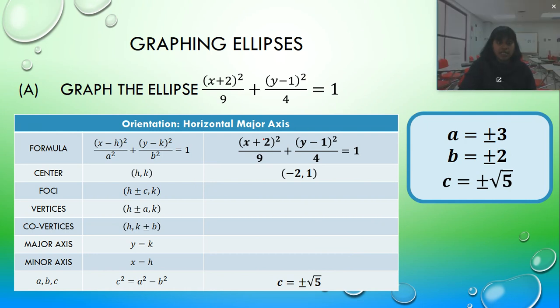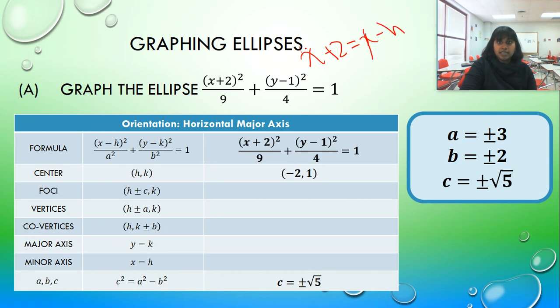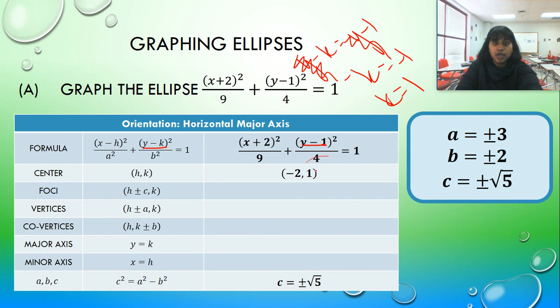H and K are very easy since x - h must be equal to x + 2. So x + 2 must be equal to x - h. Then my x's cancel out. Since 2 is equal to -h, h must be equal to -2. Let's do our y. y - k must be equal to y - 1. Then the y's are going to cancel out. So -k equals -1. Then that means k must be equal to positive 1.